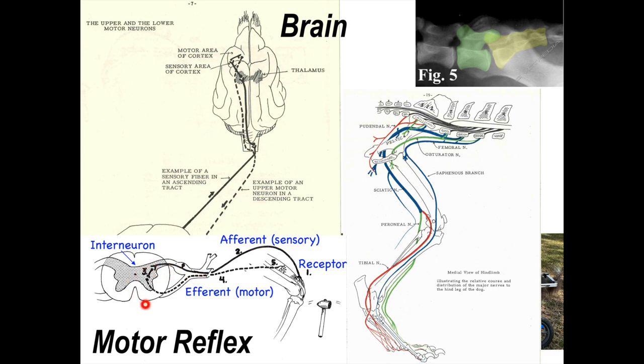To the dorsal root of the spinal nerve, where there's a little interneuron that synapses with the motor neuron, or the efferent, which sends a signal to the muscle to jerk, to contract.